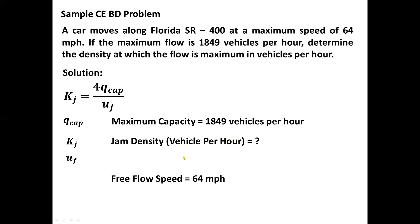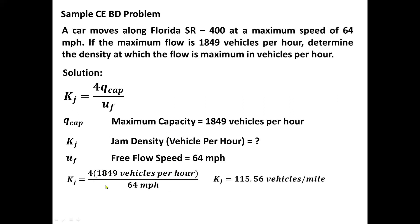U sub f is the free flow speed, which is also equal to 64 miles per hour. And now, direct substitution, we can actually compute for the jam density. We have it as 4 times 1,849 divided by 64 miles per hour. And the value of our jam density is equal to 115.56 vehicles per mile.